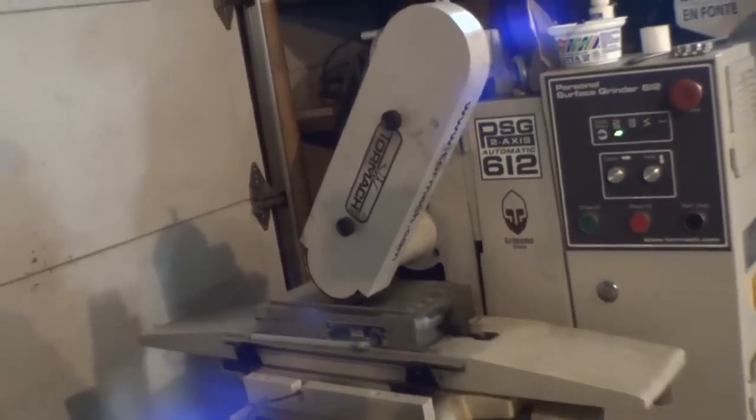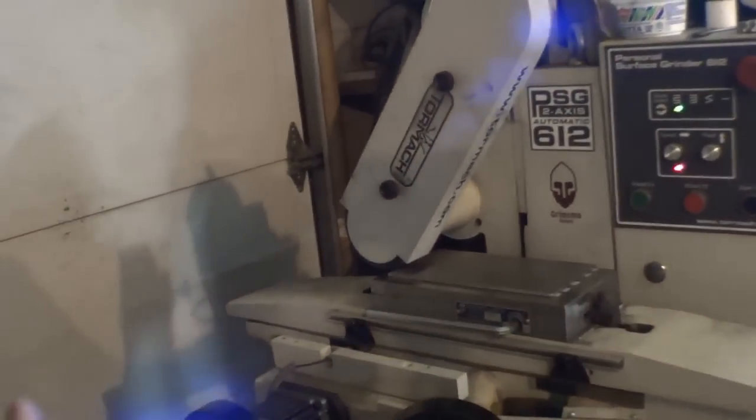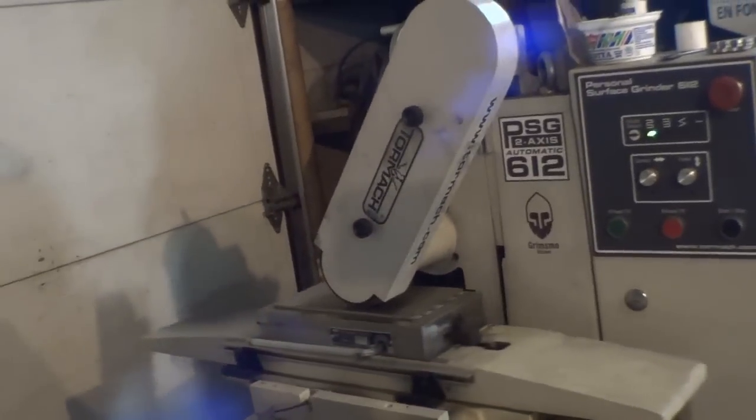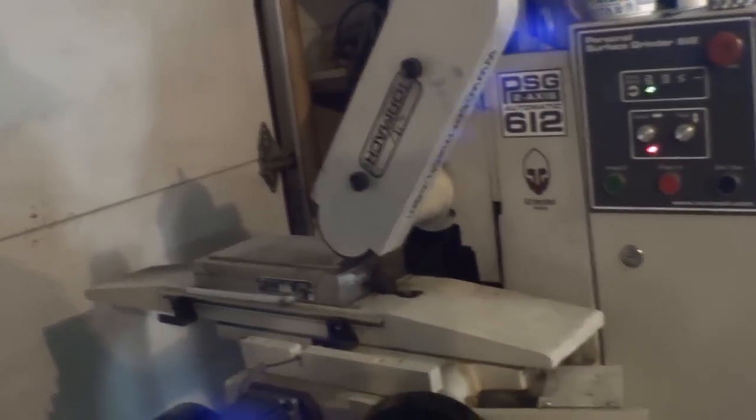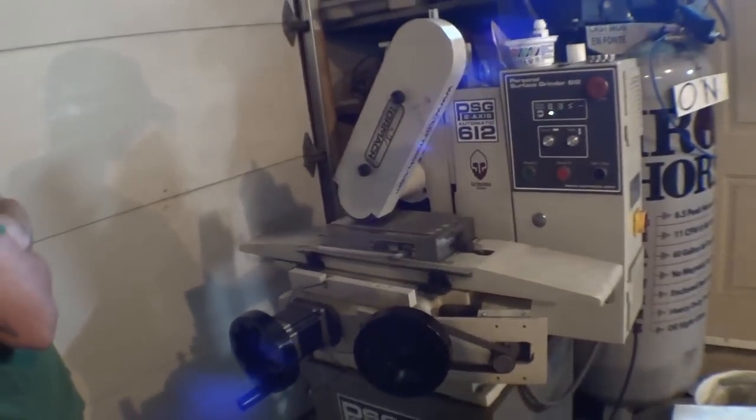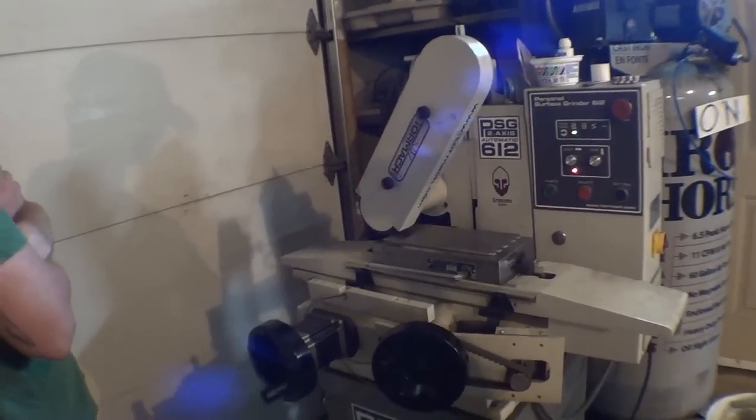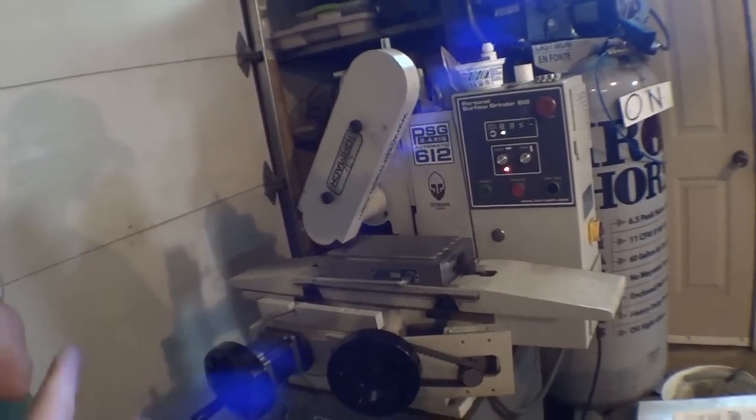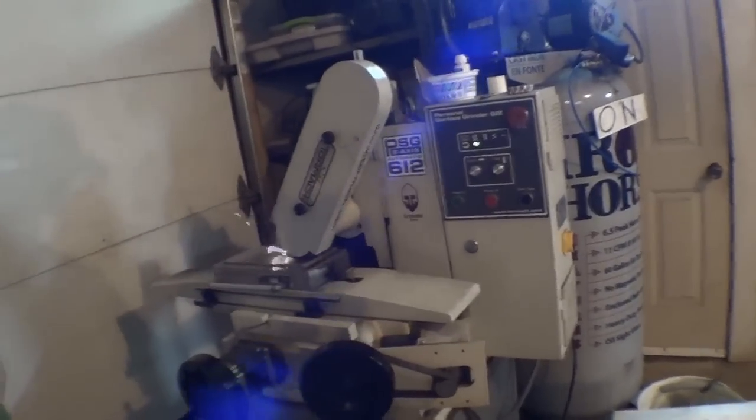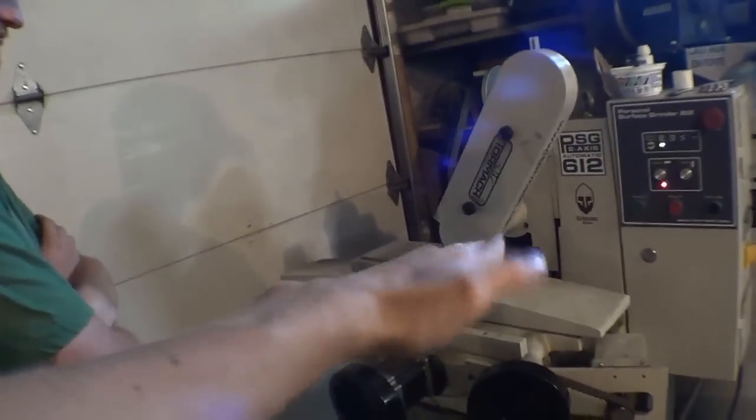So at this point, it's just going to keep going front to back until we stop it. And sometimes Eric will do that on purpose, called sparking out. So it'll just keep going and going and going until it stops cutting, basically. But this was a roughing pass, so we need to go lower now and get rid of that. You can see the dip in the middle.